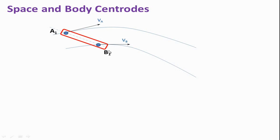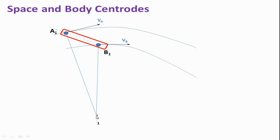To locate the instantaneous center, draw a perpendicular to VA and a perpendicular to VB until they intersect each other. The intersection of these two perpendiculars is the instantaneous center of link A1 B1 at this instant — this is the instantaneous center I1 of link AB for this moment.